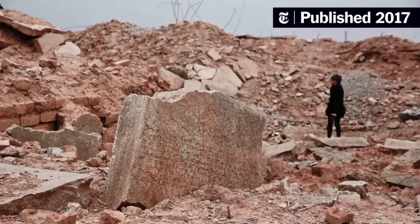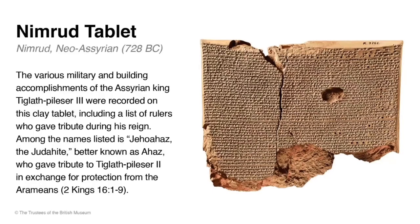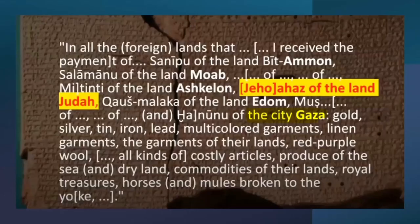In 1873, a remarkable clay tablet was discovered by an archaeologist named George Smith among the ruins of the ancient city of Nineveh in Iraq. The tablet is referred to as the Nimrod tablet and was dated to 733 BC, to the reign of the Assyrian king Tiglath-Pileser III. This tablet makes the first reference to the name Judah in the archaeological records, and right below in the same inscription, a line below, we also find the reference to the city Gaza. That's from the 8th century BC.